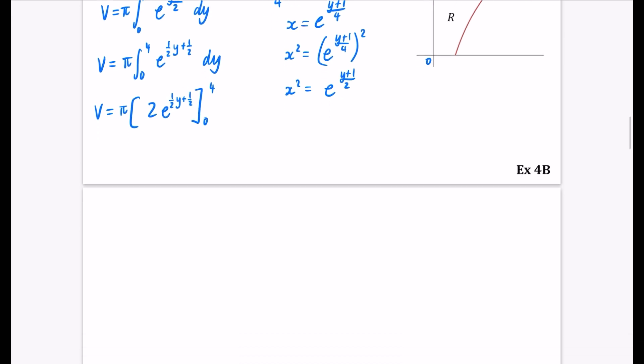So what we're going to be on to for that last part is subbing in 4 and then subbing in 0 for y. So that's going to be pi, 2e to the, well, that's going to be 4 times 1 half. 4 times 1 half is 2, 2 plus 1 half. 2 plus 1 half is 5 over 2. And then I'm going to sub in 0, which is 2e to the half.